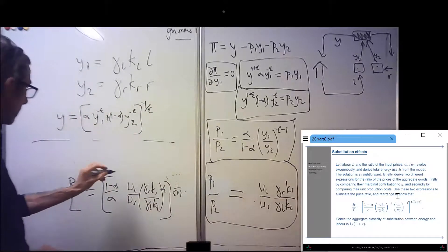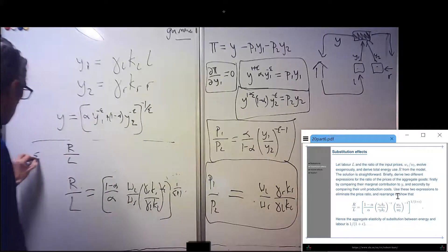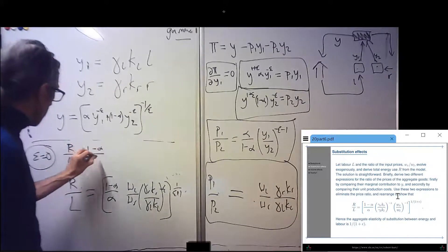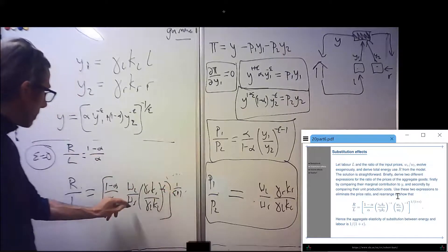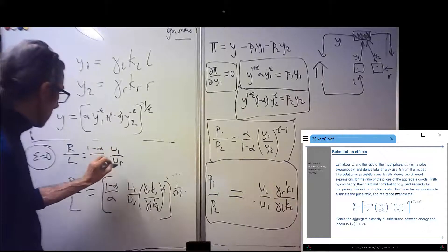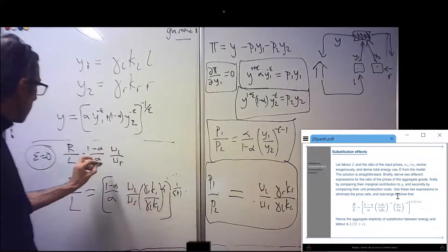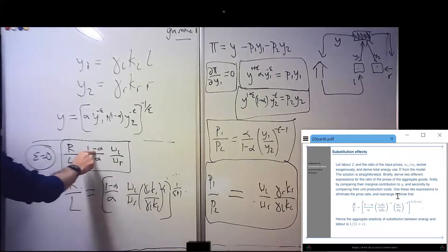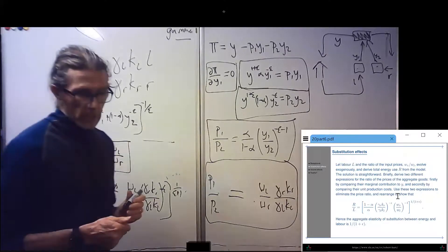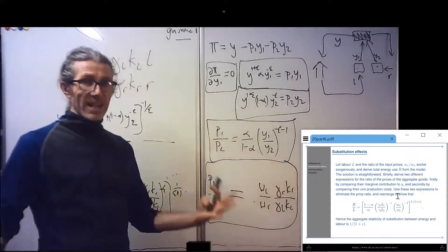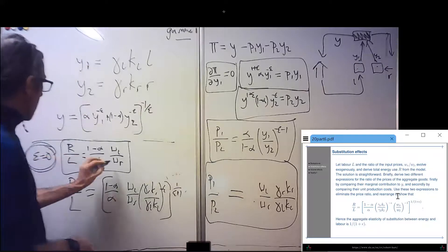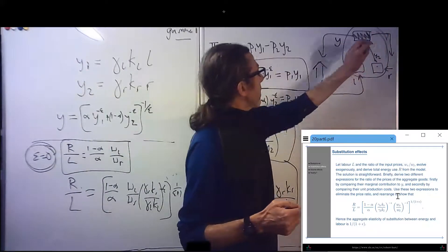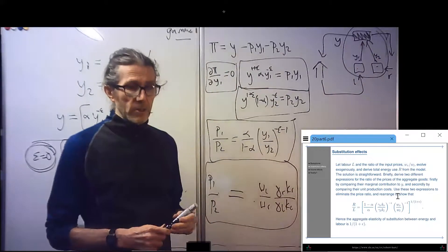And then if we set epsilon equal to naught, we end up with R over L is one minus alpha over alpha to the one times WL over WR. And this to the nought is just one. So we end up with that, which is the factor shares are constant. WR over WL times L is one minus alpha over alpha is Cobb-Douglas. So in the aggregate, if we set epsilon equal to naught, we end up with, if you take the bird's eye view and put all these in the box, don't distinguish them, you see a Cobb-Douglas production function.